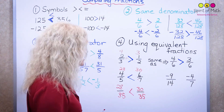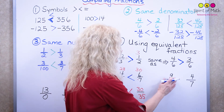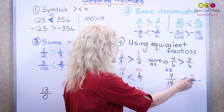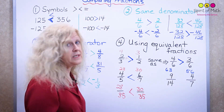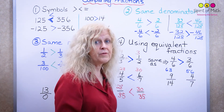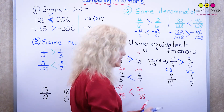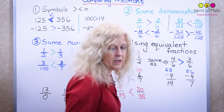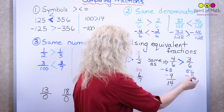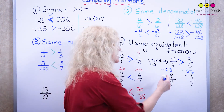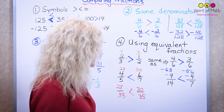Now let's do this with negatives. First do it as positives: seven times nine is 63, and 14 times four is 56. 63 is larger, so as positives that fraction would be larger. However, there was a negative in there. Seven times negative nine is negative 63, and 14 times negative four is negative 56. Negative 63 is further to the left, so it is smaller than negative 56. That's how you handle negative fractions with cross-multiplication.